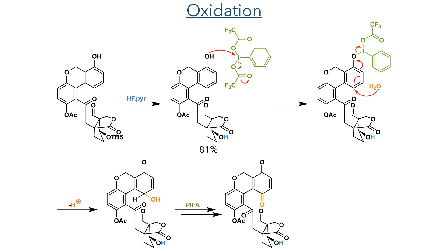This oxidation was done using bis(trifluoroacetoxy)iodobenzene (PIFA), which reacts in a similar manner to the PIDA seen earlier. The hydroxyl group attacks the iodine, displacing trifluoroacetate, electrophilically activating the ring. Water then attacks at the para position, eliminating the PIFA by-product. Further reaction with another equivalent of PIFA oxidises the hydroxyl group, forming the quinone.